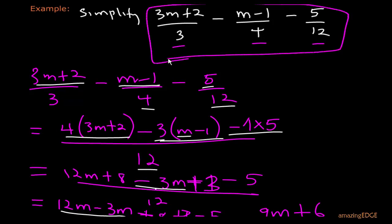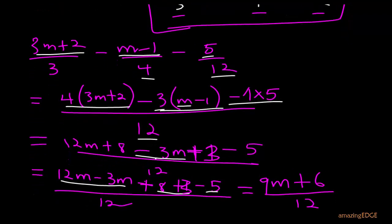So when we simplify this, the result we get is this expression we have here, which is 9m + 6 over 12. And that should be the simplification.